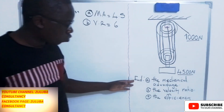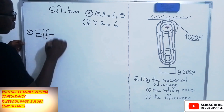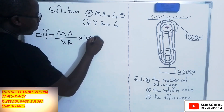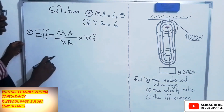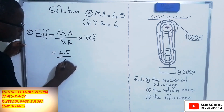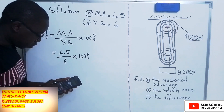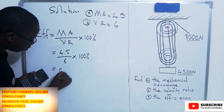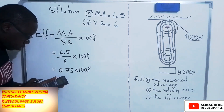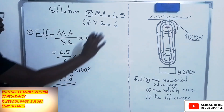The third question is asking us to find the efficiency of this pulley system. Efficiency is equal to mechanical advantage divided by velocity ratio, multiplied by 100%. From the previous parts, mechanical advantage is 4.5 and velocity ratio is 6. So efficiency equals 4.5 divided by 6, multiplied by 100%. That gives us 0.75 multiplied by 100%, which equals 75%. So 75% is the efficiency of this pulley system.